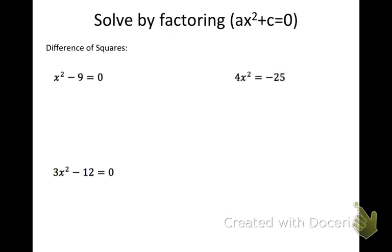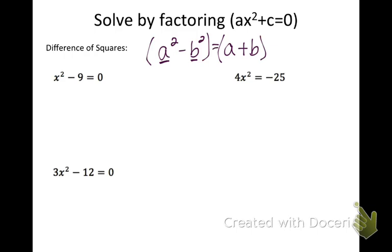Now we're going to factor what's called difference of squares — that's whenever we're missing the bx term. We have an x squared and a constant term, but no bx term. A difference of squares is when we have a squared minus b squared. If you have something squared minus something squared, you can rewrite it as the square root of each: a plus b and a minus b. One big thing to point out: it says difference of squares — if you ever had a plus sign, you couldn't do this. We don't have a sum of squares rule, only a difference of squares rule.